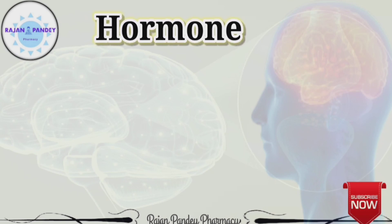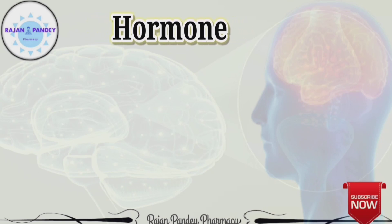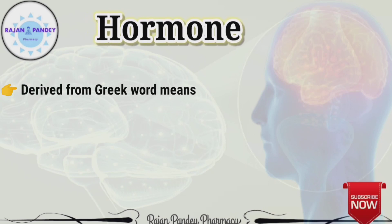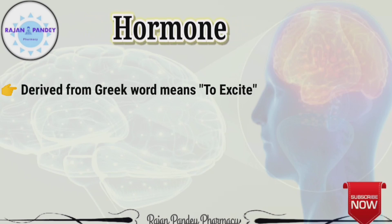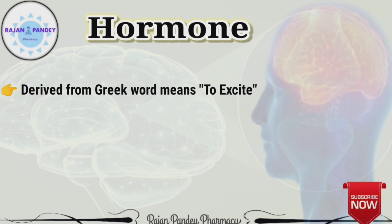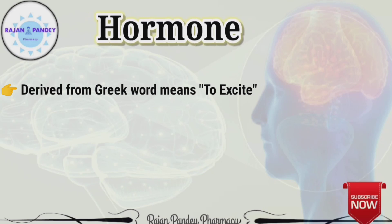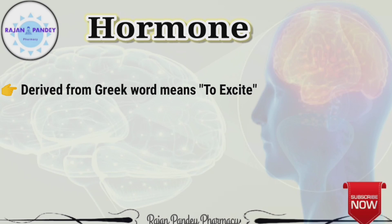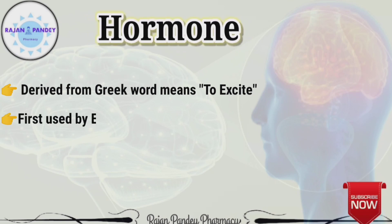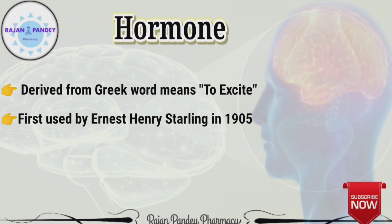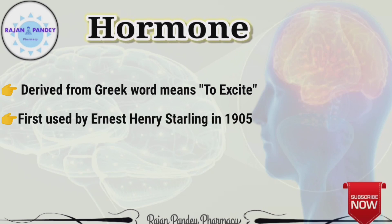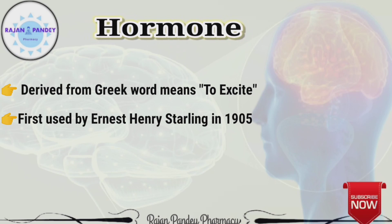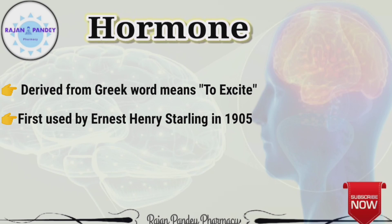Let's start the video. The term 'hormone' is derived from a Greek word which stands for 'to excite.' The term hormone was first used by Ernest Henry Starling in 1905, in his first lecture delivered to the Royal Society.